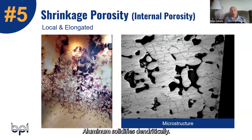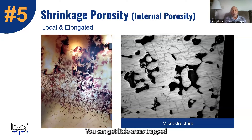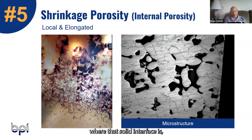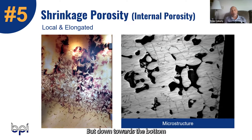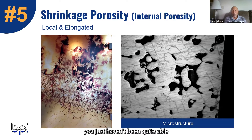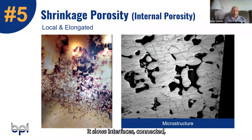Aluminum solidifies dendritically. You can get little areas trapped between those dendrites as they form. Looking at the picture on the left, down towards the bottom where the solid interface is, you can see some minor areas that have been trapped as those dendrites formed — you just haven't been quite able to get metal to them. The interstices are connected and it tends to be localized and is definitely related to feeding the part.